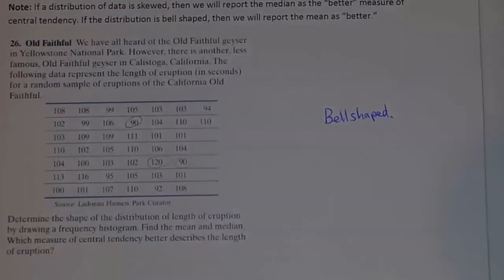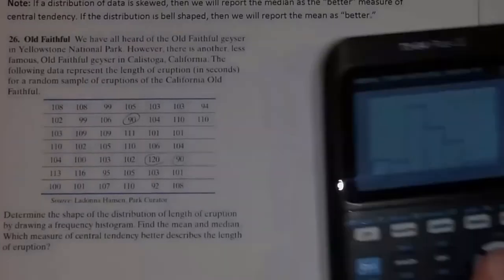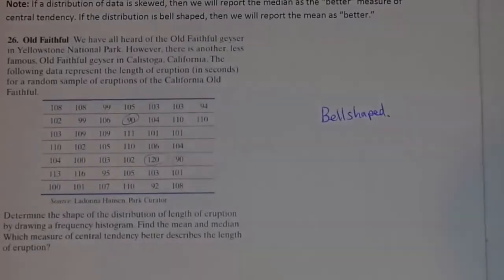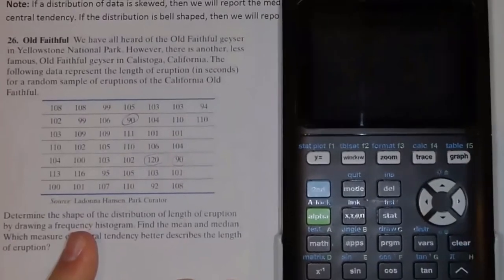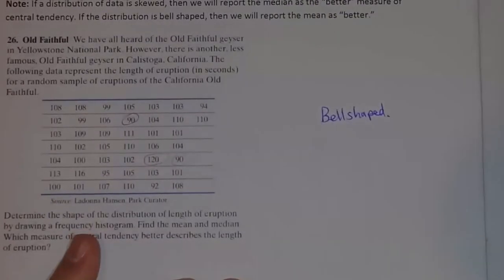When you're working on the homework, there will be some scenarios where the shape is debatable. If you get an answer marked wrong — say you said bell-shaped but the problem says skewed right — send me an email and explain your reasoning. If I agree it's debatable, I'll give you credit. There are wrong answers though: if this were called skewed left or uniform, those are wrong.